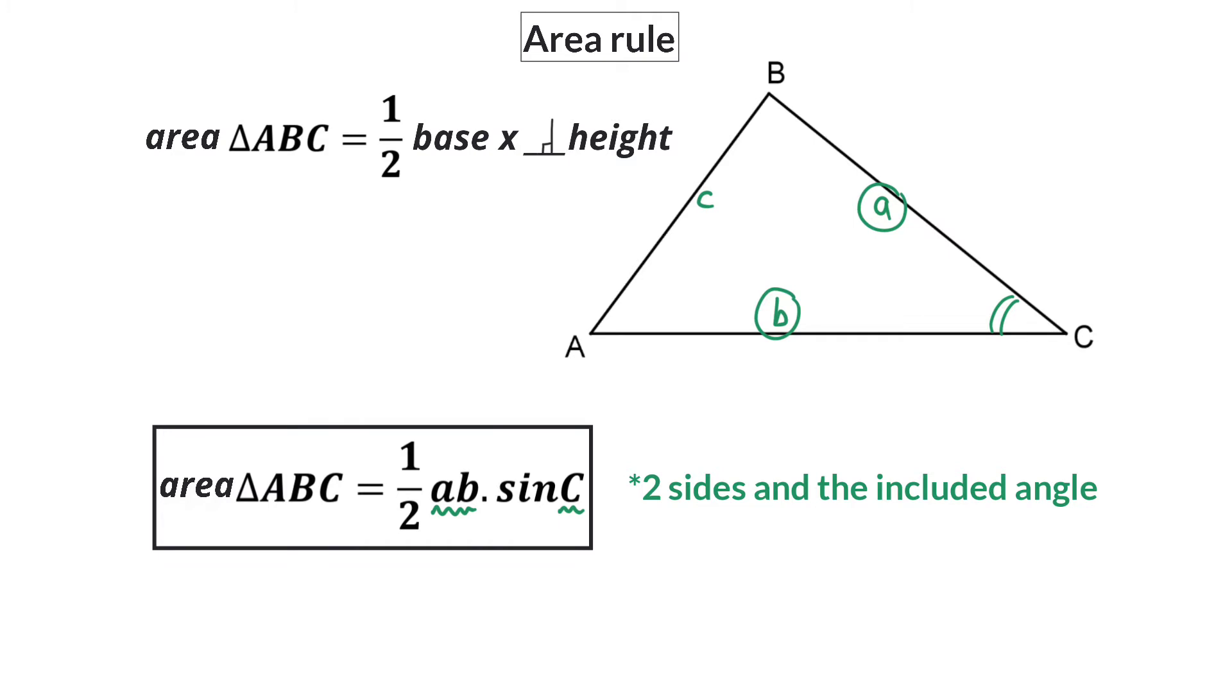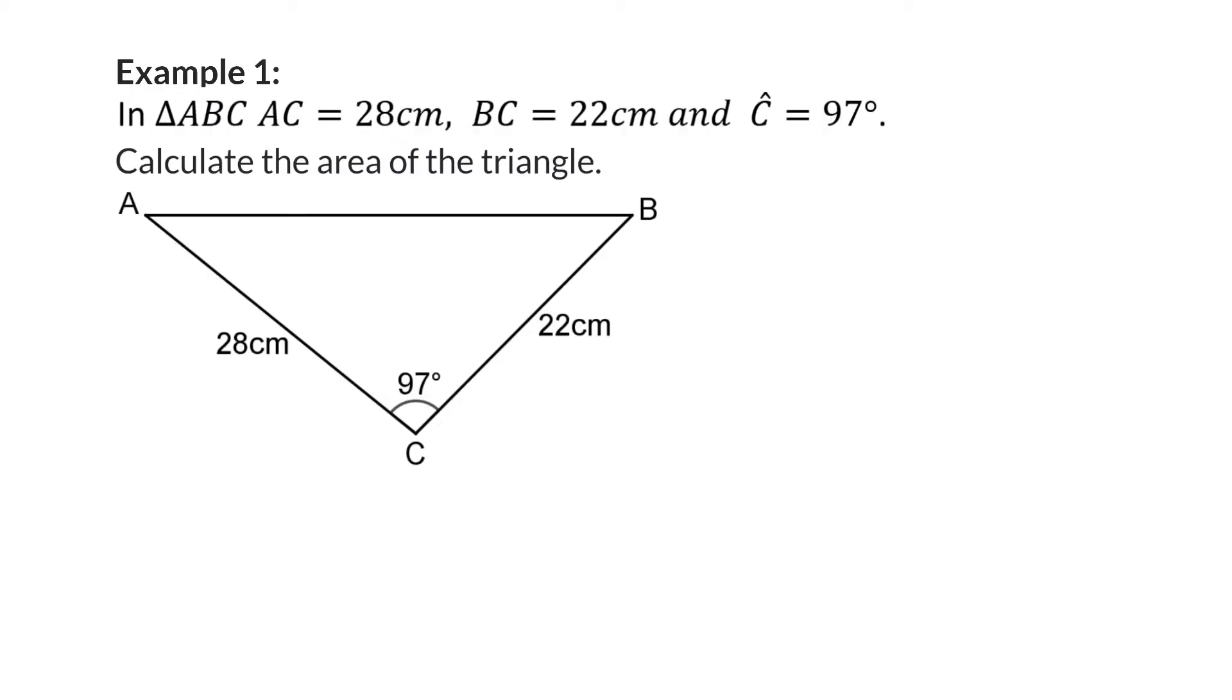Let's have a look at examples where we use this rule. Example 1: In triangle ABC, AC is 28 cm, BC 22 cm, and angle C 97 degrees. Calculate the area of the triangle.